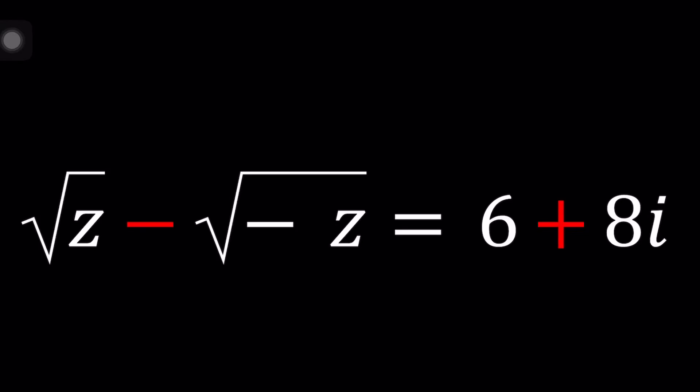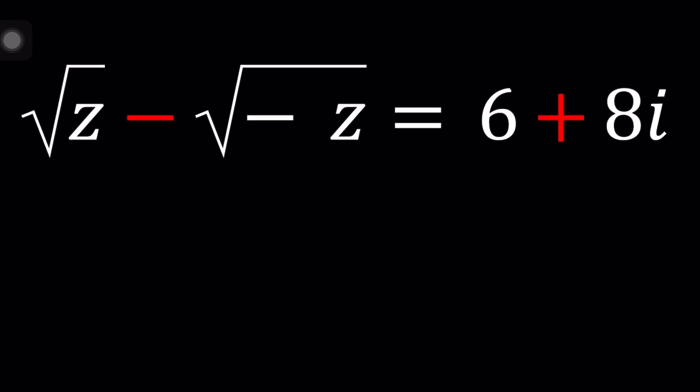Hello everyone. Welcome to A plus B I. This channel is all about complex numbers and in this video we're going to be solving a very radical equation with complex numbers. We have the square root of z minus the square root of negative z equals 6 plus 8i and we're going to try to solve for z. I'll be presenting two methods.